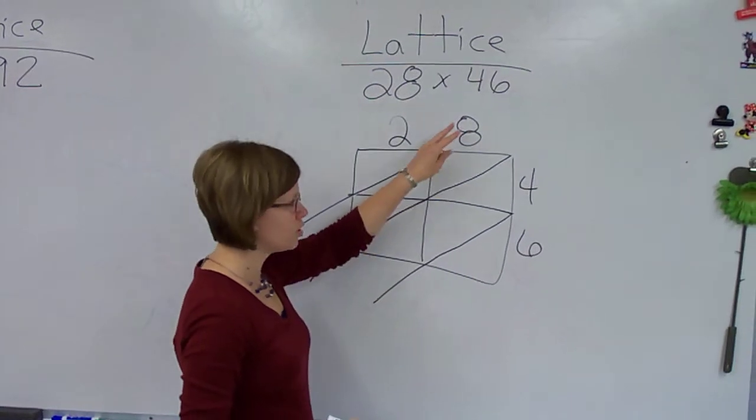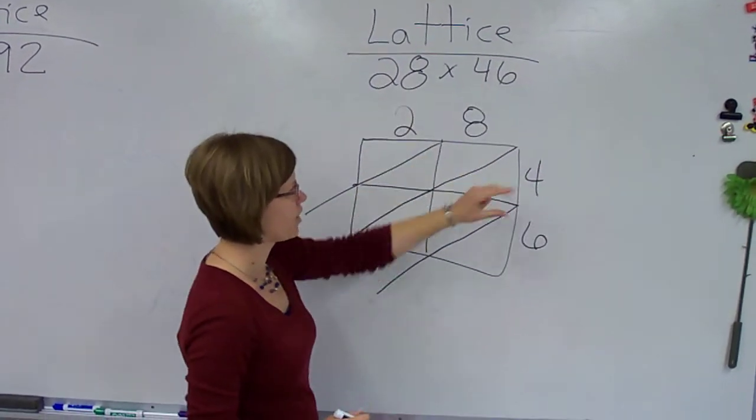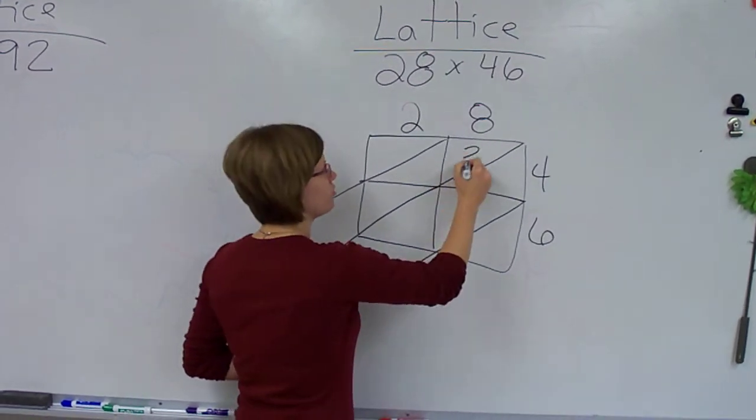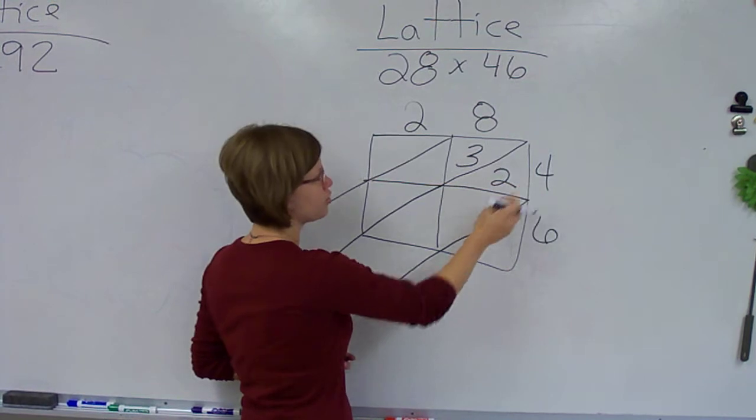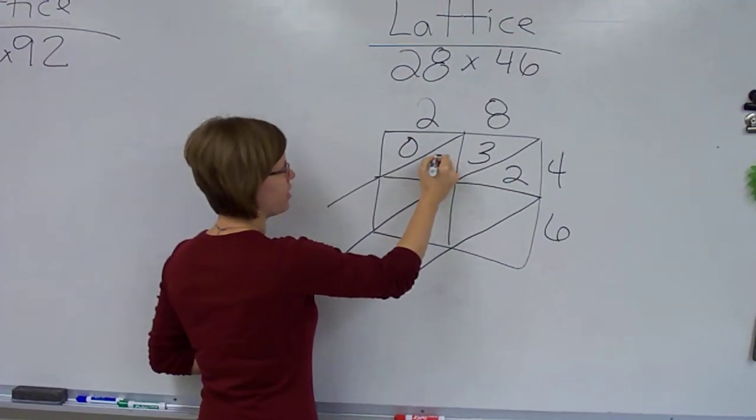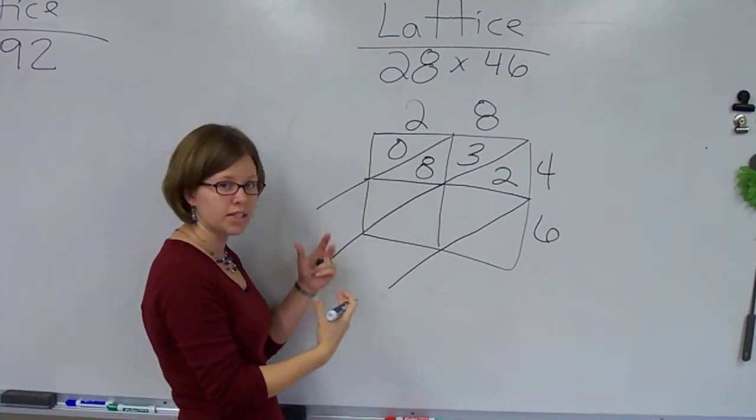And then I'm ready to multiply each one together. Okay, so we're going to do 8 times 4, which is 32. My 3 goes in the top half, 2 goes in the bottom half. 2 times 4, which is 8. I have to have a 0 and then an 8 there, because what these are doing is separating your 10s place from your 1s place.